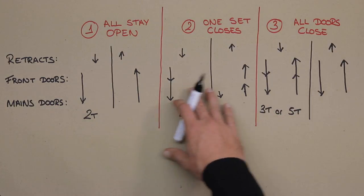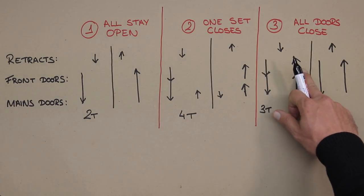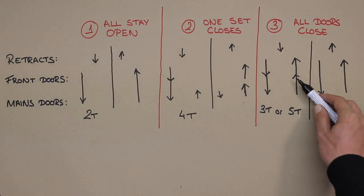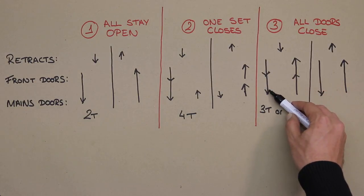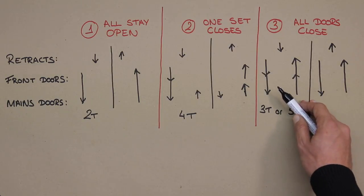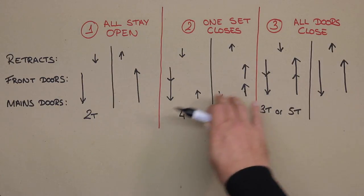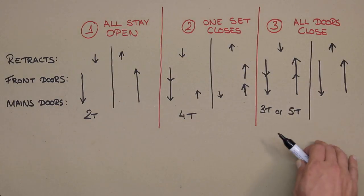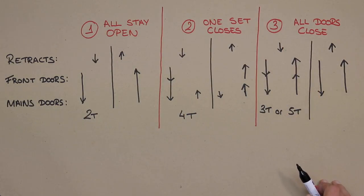Of course, you can complicate this to any degree that you wish. You can have each one of these operating at different speeds, or have only the main doors start moving after the front doors have finished their movement. Anything that you need. But all of that, beyond these 3 basic steps, would need to be done manually, as opposed to through the wizard. Because remember, the wizard are just for these 3 steps. Simple.